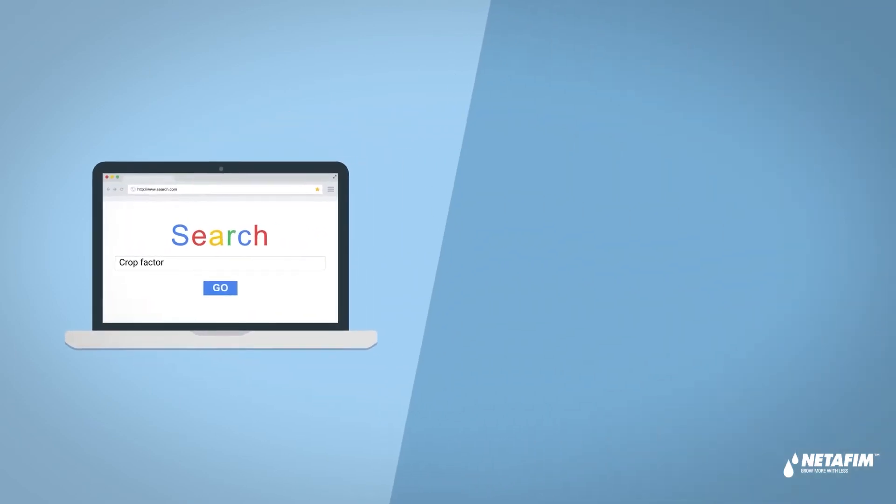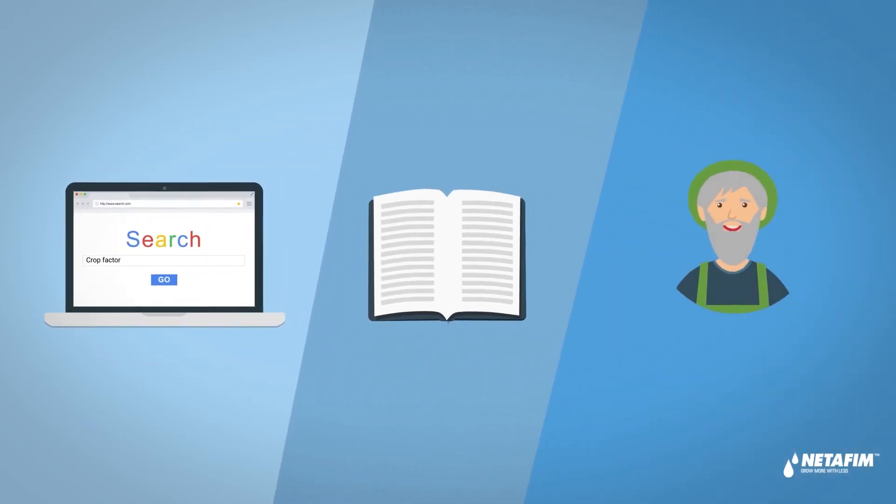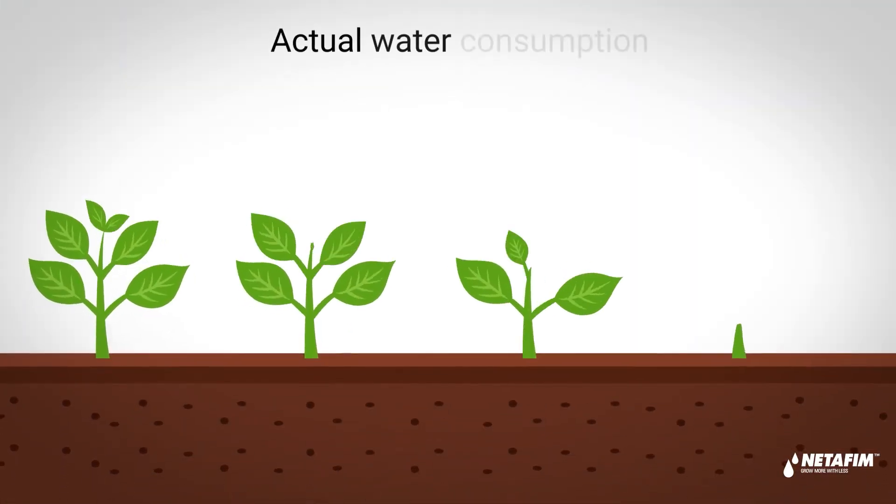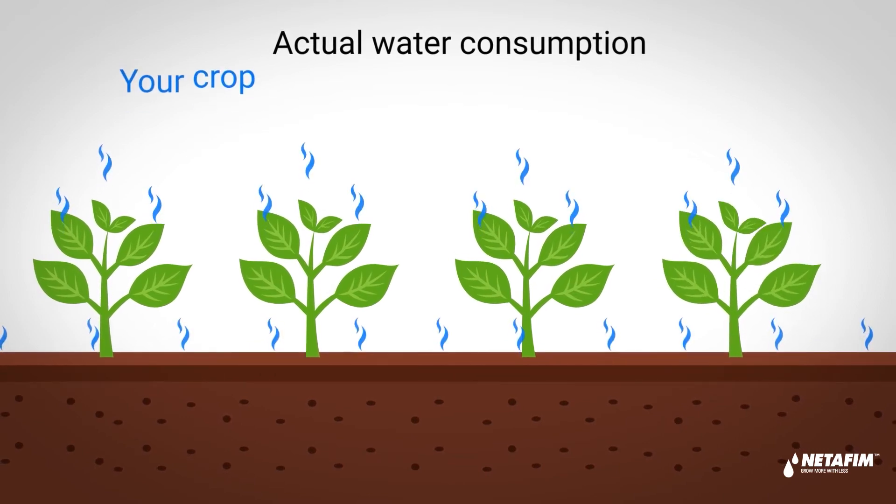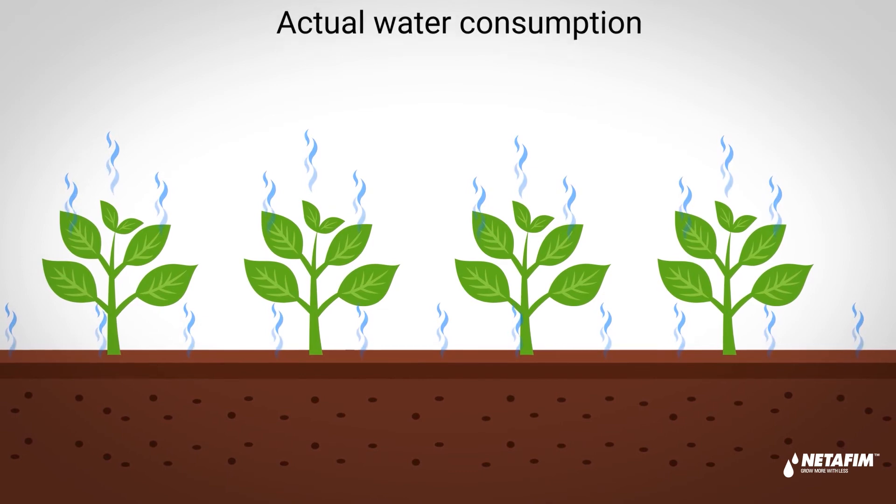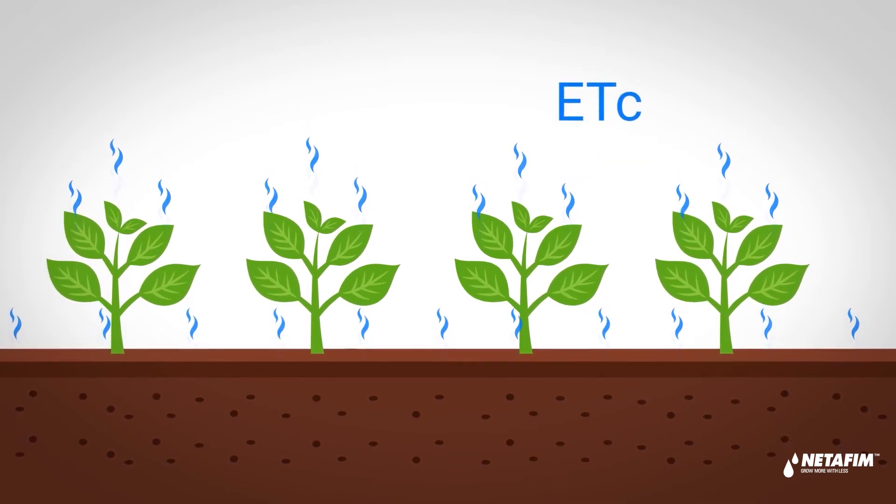So in order to work out the actual water consumption of your crop in a specific field at a specific growth stage - that is, to get the ETC - we simply multiply the ETO by the crop factor.